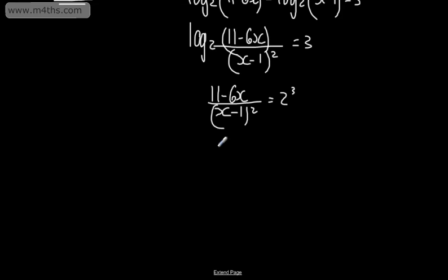Multiplying both sides by x minus 1 all squared, on the left hand side, 11 minus 6x will be equal to 8 lots of x minus 1 all squared.